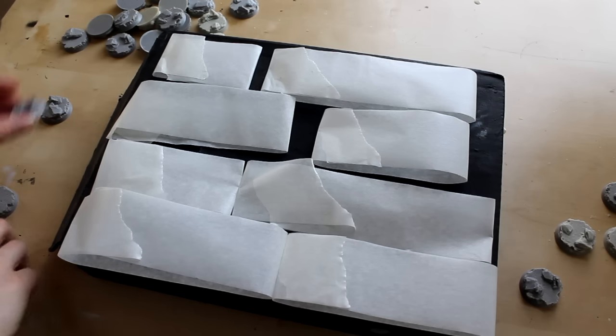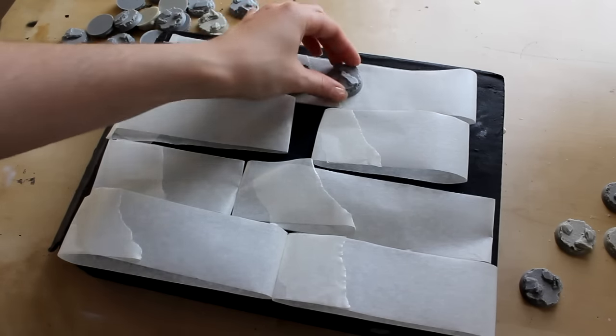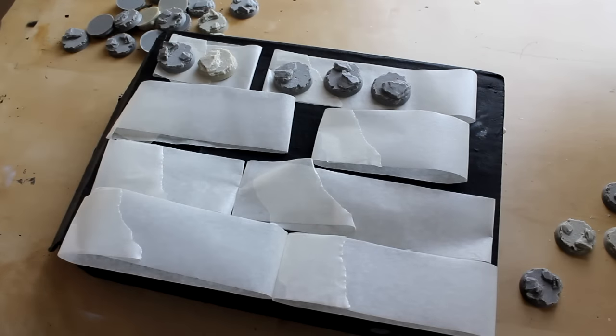To get your bases spray coated faster, use tape to stick them to a flat surface such as a board or a box like this.